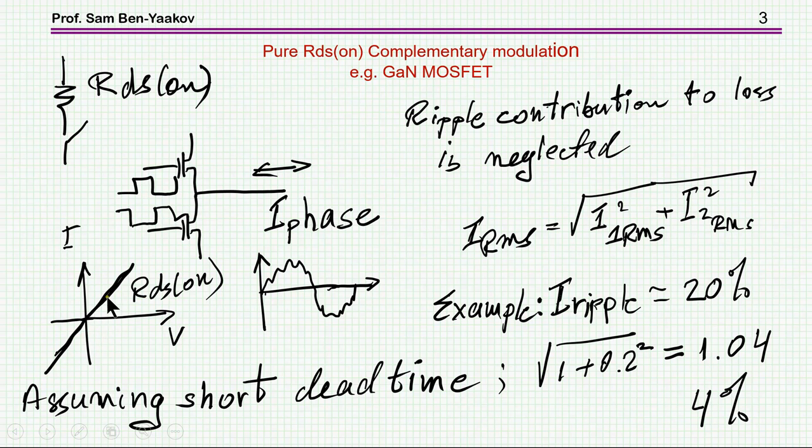So you can consider this transistor as a resistor plus a switch, and I'm talking about cases that the diode does not play a role, because the RDS1 is low or small, and therefore the voltage drop is low, and in the GaN, there is no actually diode.